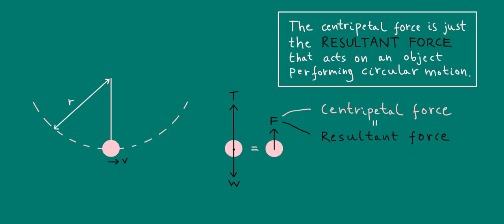Because the resultant force on an object moving at constant speed in a circle is always pointing towards the center of the circle, we just decide to call the resultant force the centripetal force. Centripetal means directed towards the center. So it's just another name for the resultant force.